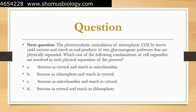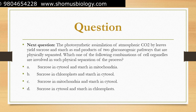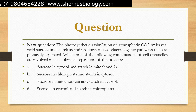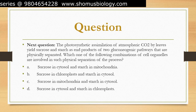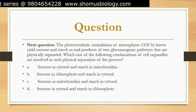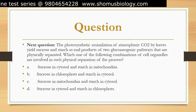In photosynthetic assimilation of atmospheric CO₂ by leaves, sucrose and starch are the end products of two gluconeogenic pathways that are physically separated. Sucrose is synthesized in the cytosol, while starch is synthesized in chloroplasts. Therefore, the correct answer is option D.